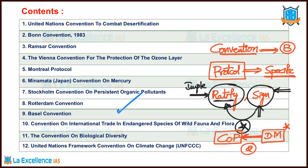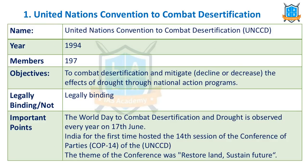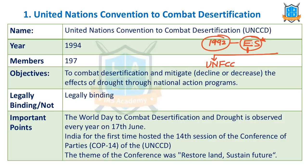Let us start with the United Nations Convention to Combat Desertification. The first important convention is UNCCD. There was a summit in 1992 called the Earth Summit. Under this Earth Summit, all the world countries agreed for three important conventions: first, UNFCCC — United Nations Framework Convention on Climate Change; second, the United Nations Convention on Biodiversity; third, the United Nations Convention on Combating Desertification — CCD. UNCCD is effective from 1994 and has 197 member countries.